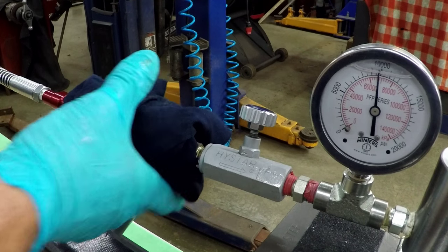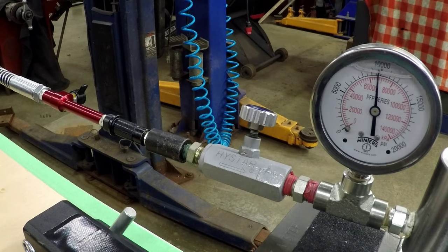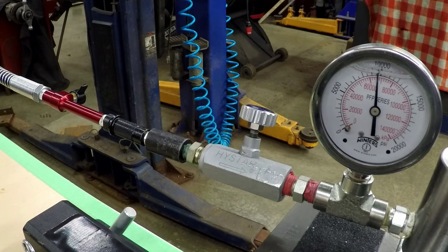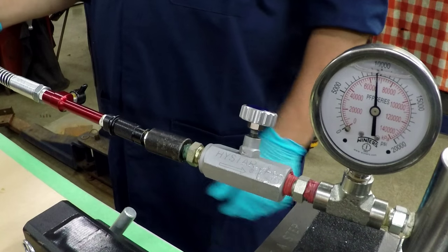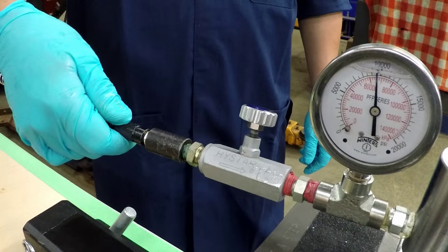There you go, that's 10,000 PSI. As you can see, the hose is bar tight. You're never going to be able to let that go.